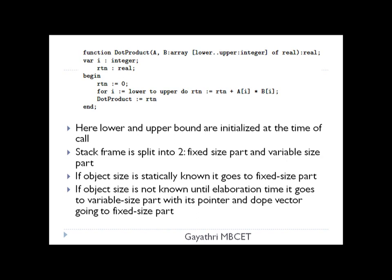Lower and upper bounds are initialized at the time of call. The stack frame is split into two regions: a fixed part and a variable size part. If the object size is statically known, it is placed in the fixed size part. If the object size is not known until elaboration time, it is placed in the variable size part along with a pointer and its corresponding dope vector at the fixed size part.